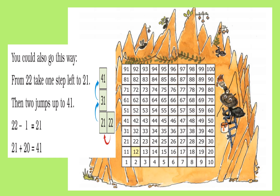We could have also gone the other way. First, from 22 we take one step towards the left to reach 21, then jump two rows above to reach 41. We write it as: 22 minus 1 equals 21, and 21 plus 20 equals 41.